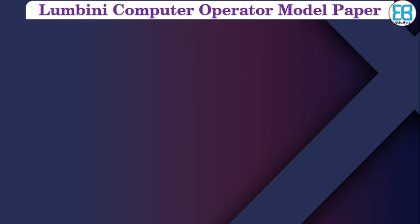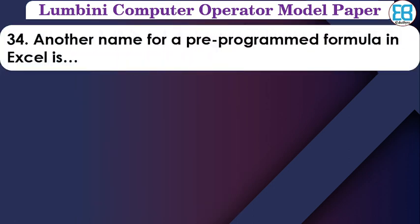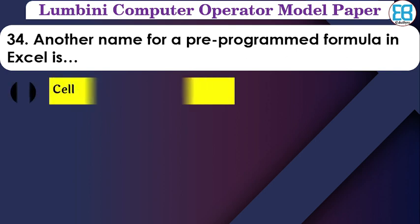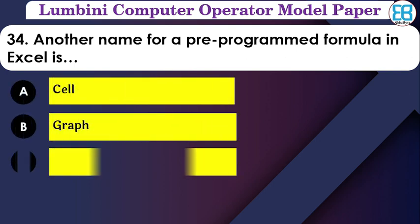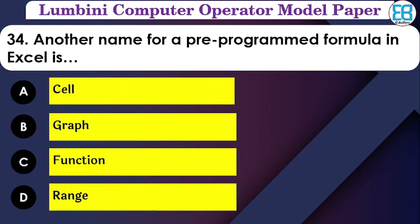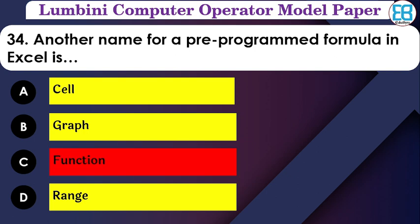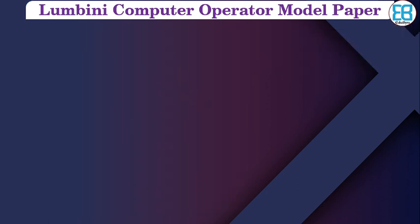What is the name for a pre-programmed formula in Excel? The options are: cell, drop, function, range. The correct option is function — a pre-programmed formula in Excel is called a function.